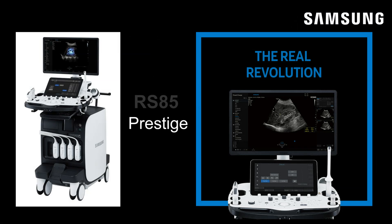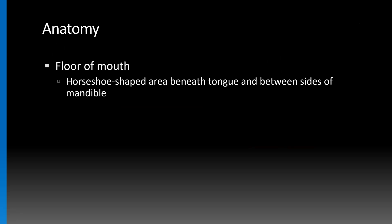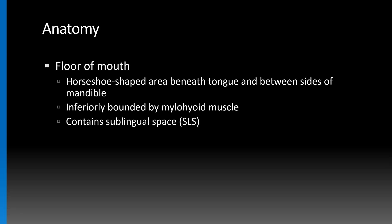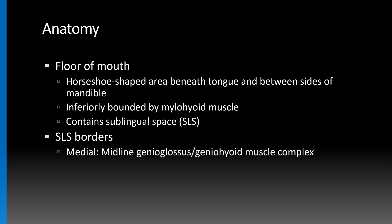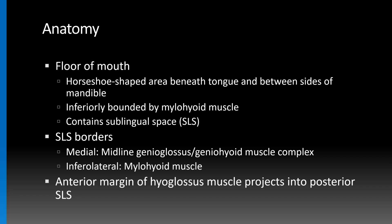I'm going to show two cases of dermoid cysts of the floor of the mouth and explain relevant neck anatomy. The floor of the mouth is a horseshoe-shaped area located beneath the tongue and between the sides of the mandible. It's inferiorly bounded by the mylohyoid muscle, which is shaped like a sling or a hammock. The sublingual space is also located at the floor of the mouth. Its borders are relevant: medially is the midline genioglossus-geniohyoid muscle complex, and inferolaterally the mylohyoid muscle. The anterior margin of the hyoglossus muscle projects into the posterior aspect of the sublingual space. These muscles are important anatomic landmarks we can see quite well on ultrasound.